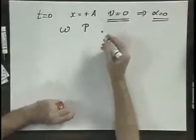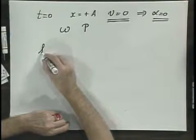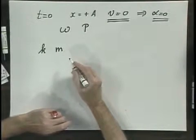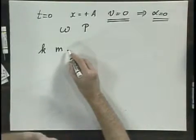A given spring with a given value of k and a given value for the mass that hangs on this spring has one and only one period.